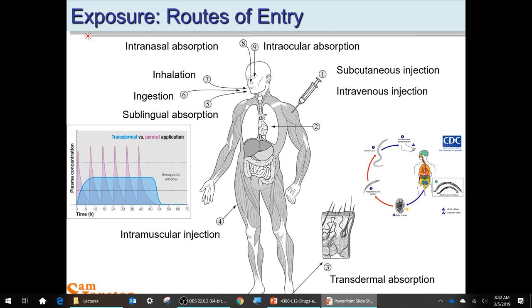They also make sublingual tablets for anti-nausea drugs — you put it under your tongue and it makes your nausea go away so you don't have to swallow it and risk vomiting it back up. There are also little tabs you put behind your ear for motion sickness that go right through the skin — transdermal. Nicotine patches are transdermal, and there are even birth control patches.